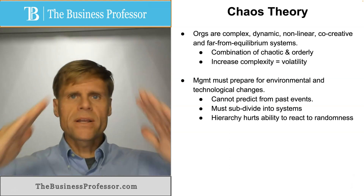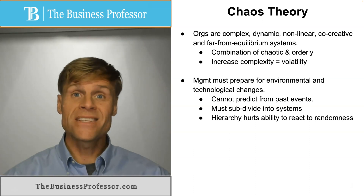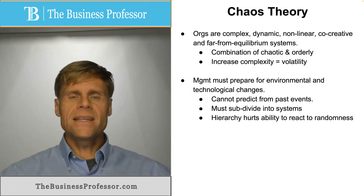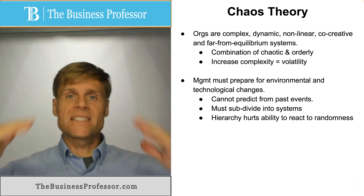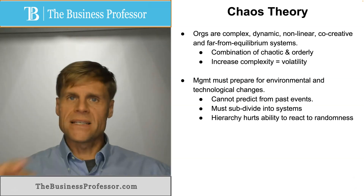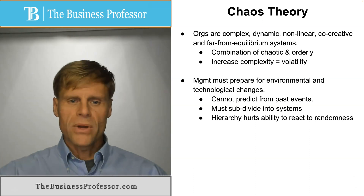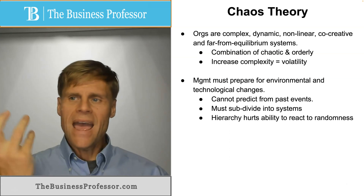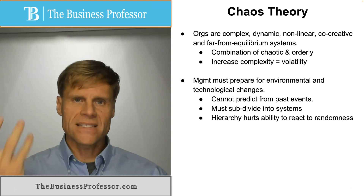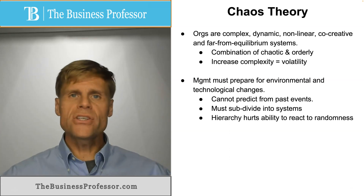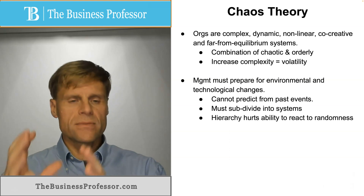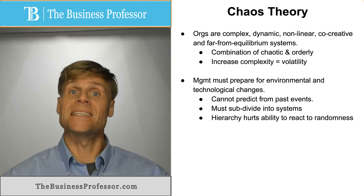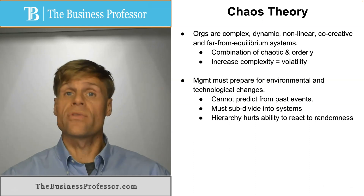Your traditional hierarchical structure of an organization tends to hurt the ability to break organizations down into systems, because it tends to look at the organization as singular and management at the top makes decisions that flow down. But if you break organizations into systems, much of the decision making and autonomy has to happen within those systems. Having the traditional hierarchy thwarts the ability of those systems to act independently and respond to the chaos that is inherent in a larger, more volatile organization.